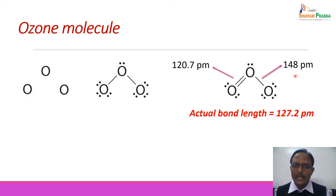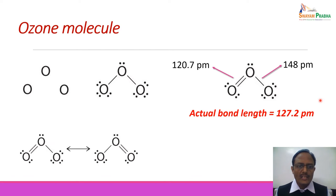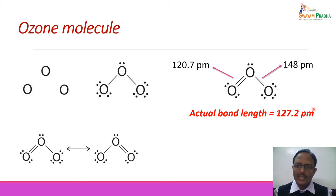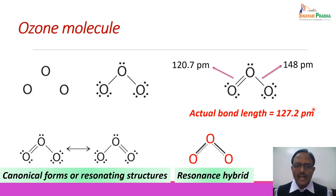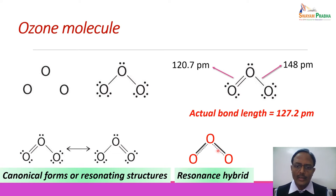This can be explained only if we consider the ozone molecule as a combination of two different structures, wherein there is delocalization of electrons — for some time one bond exists as a double bond and for some time the other does. These two structures are the canonical forms of O3. The actual structure is the resonance hybrid of these two, where both bonds get partial double bond character, denoted by a dotted curve between the three oxygen atoms. Both bonds are equivalent, with a bond length intermediate between single and double bond, fully explaining the observed value of 127.2 pm.